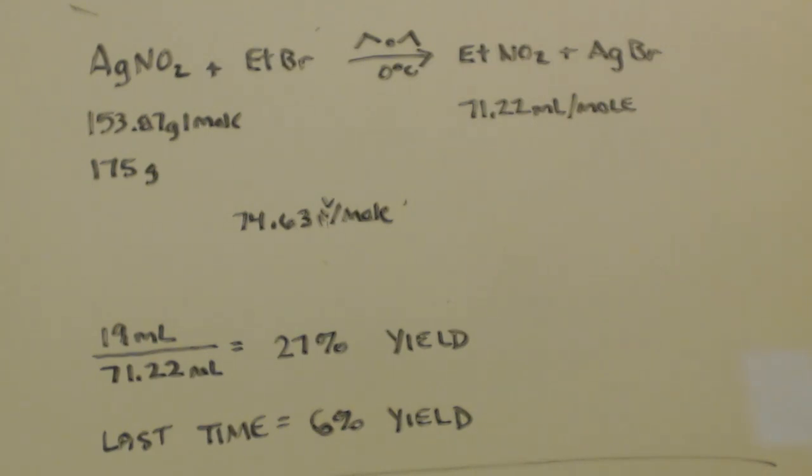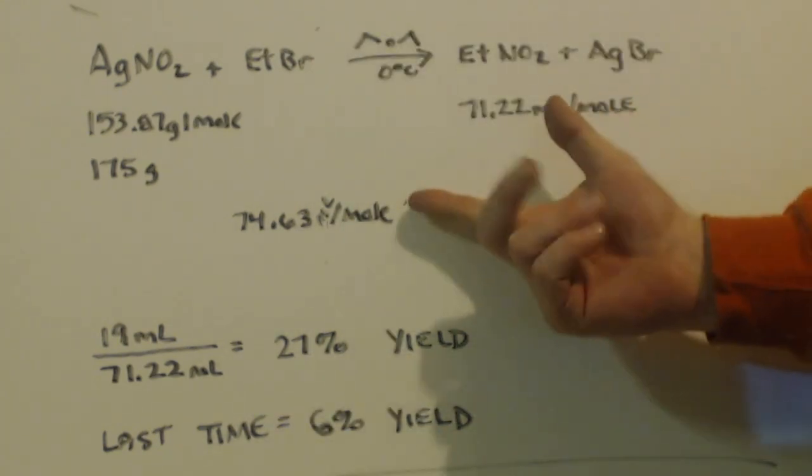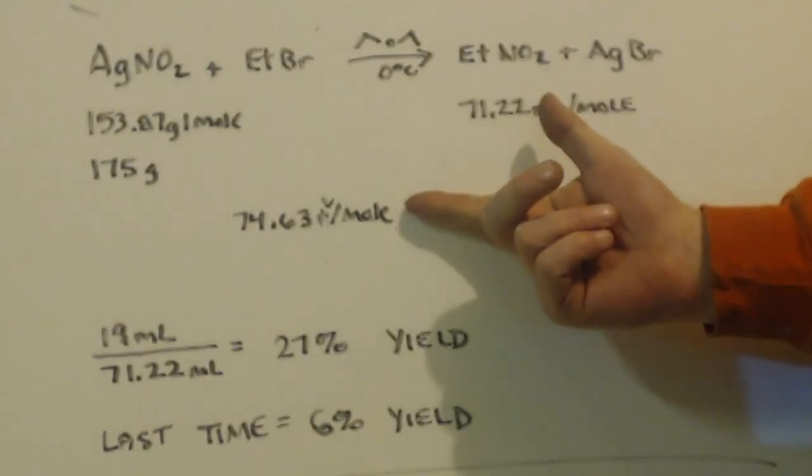The way you can tell that you're done is by taking a little sample and putting it in some ethanolic silver nitrate. And if there's any precip, that means you still have ethyl bromide left and the reaction isn't done.